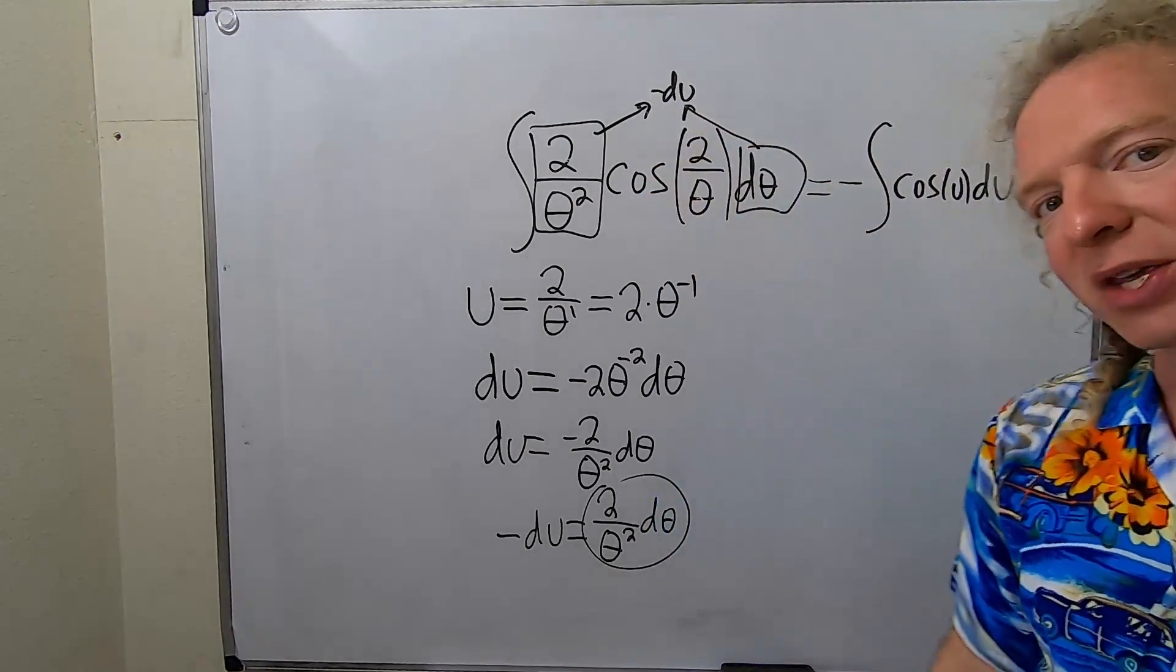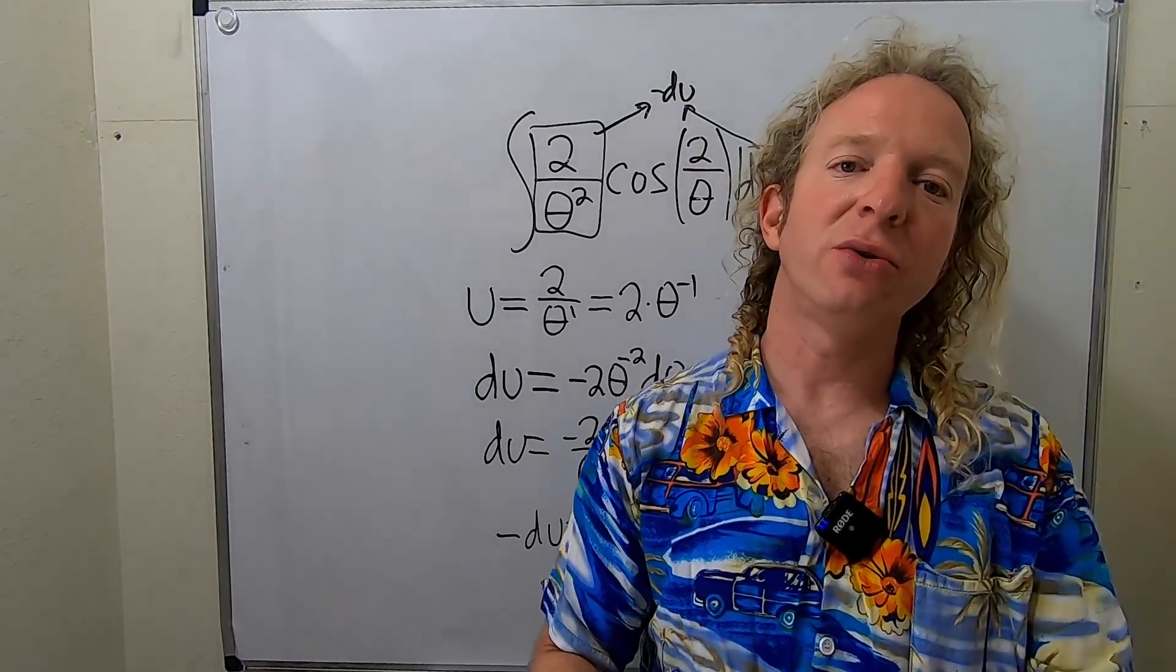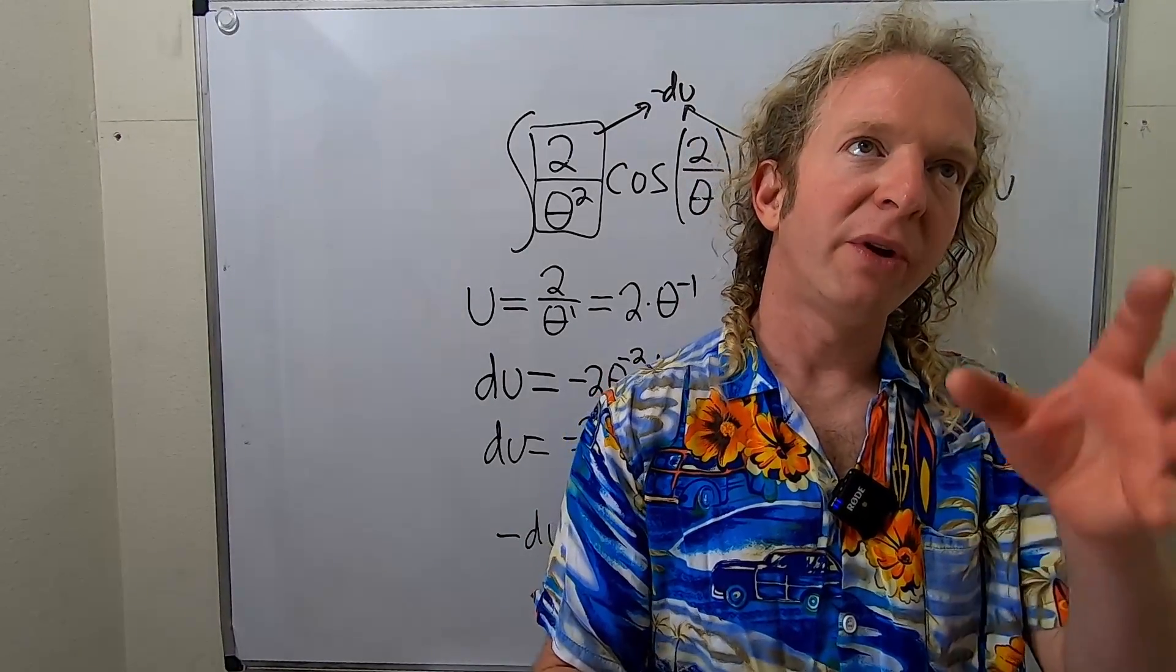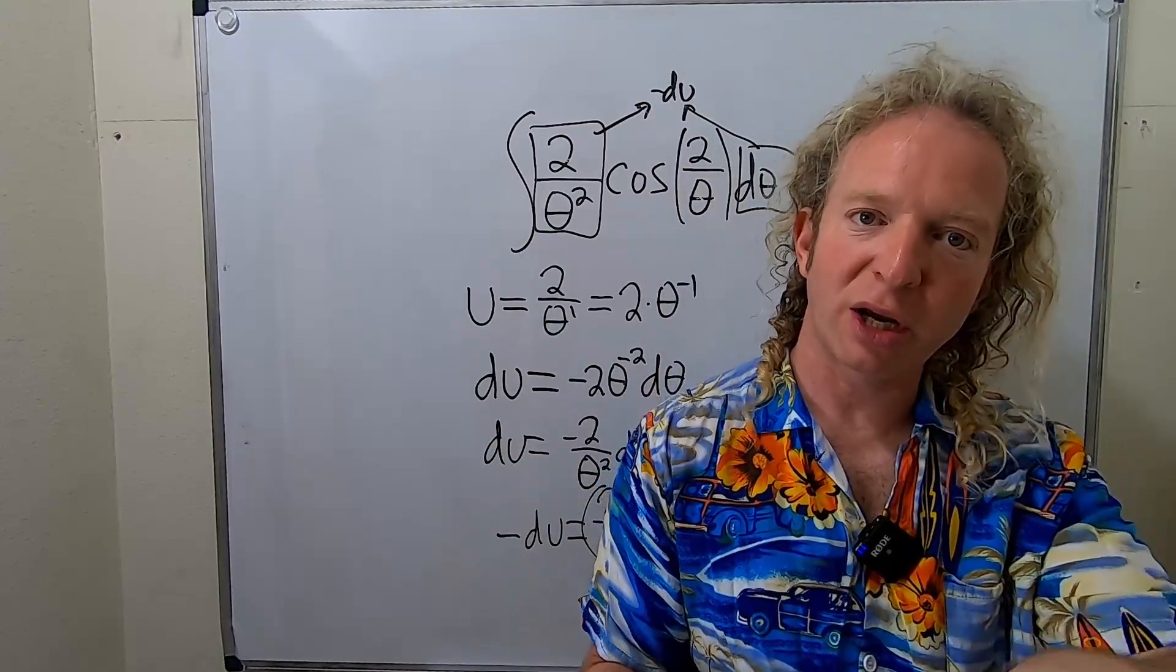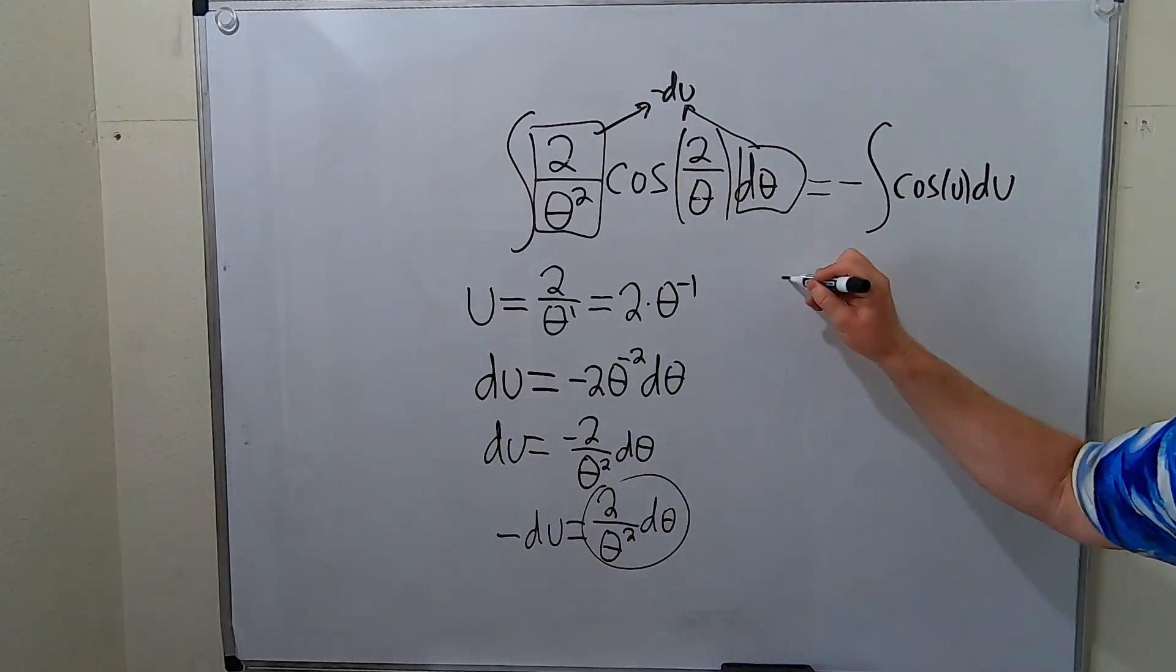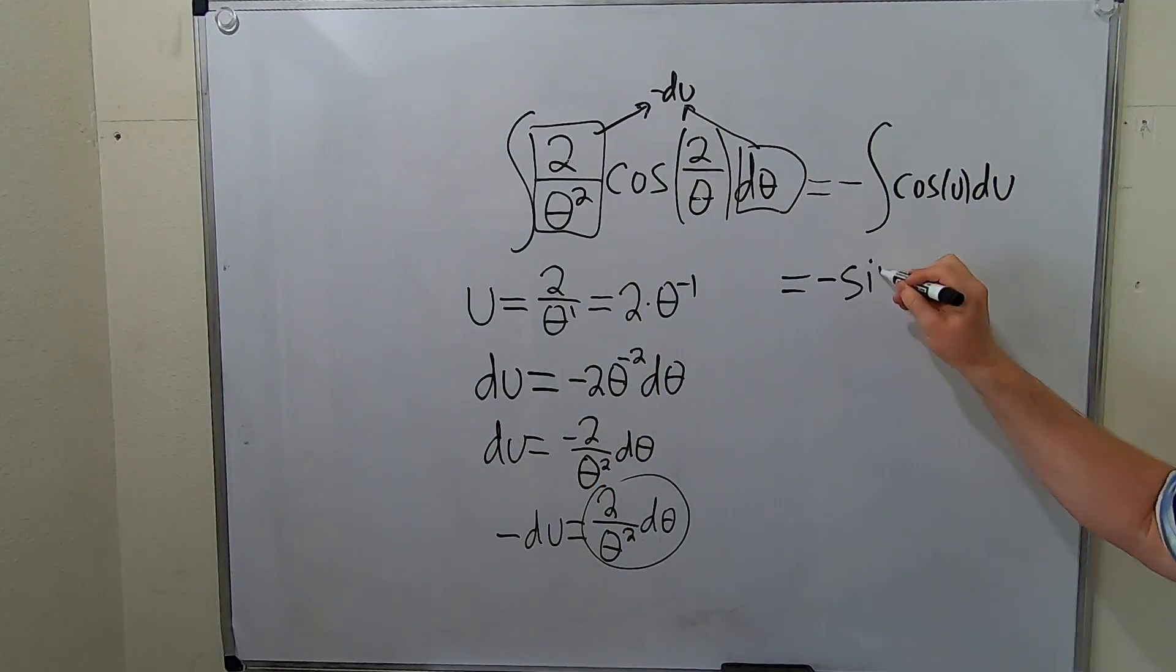When you're integrating cosine, you should ask yourself, what is a function whose derivative is cosine? Well, the derivative of sine is cosine. So when you integrate cosine, you get sine. So this is negative sine of u plus capital C,